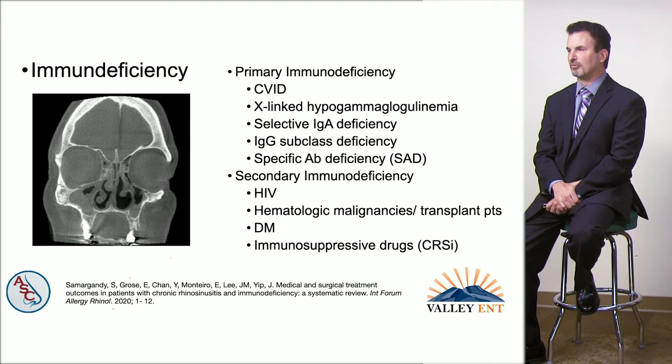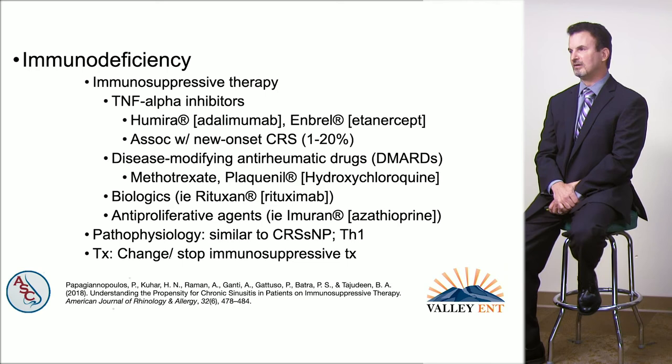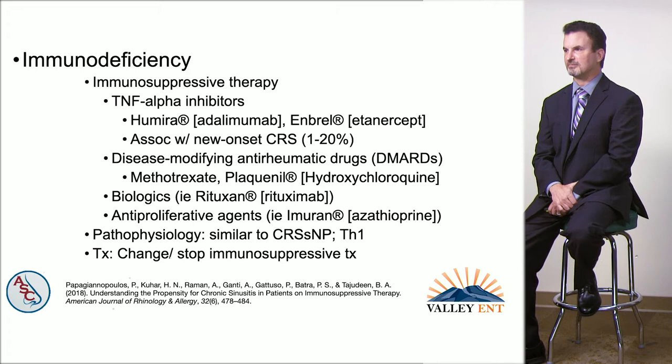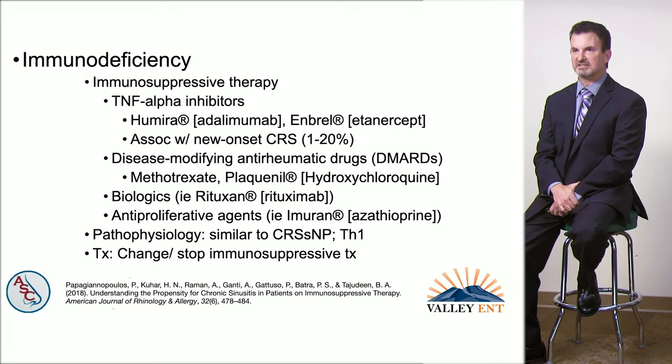Immunodeficiency can be primary or secondary. We're seeing more secondary cases from diabetes, HIV, or immunosuppressive drugs used to treat rheumatologic conditions, hematologic malignancies, or transplant patients. The most common drugs associated with new-onset CRS are tumor necrosis factor-alpha inhibitors such as Humira. These patients have similar pathophysiology to patients with neutrophilic inflammation, and the treatment is to change or stop the immunosuppressive drug.